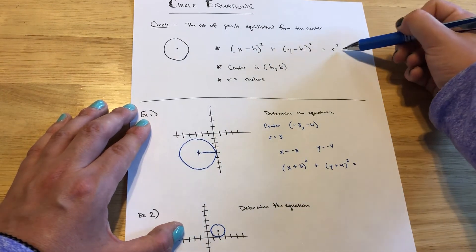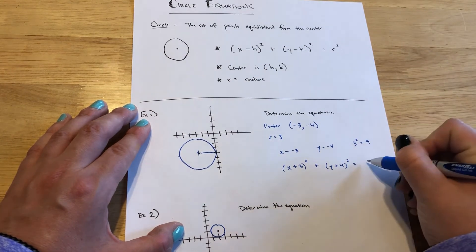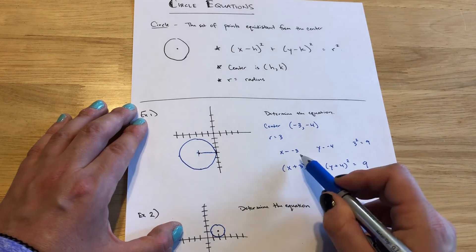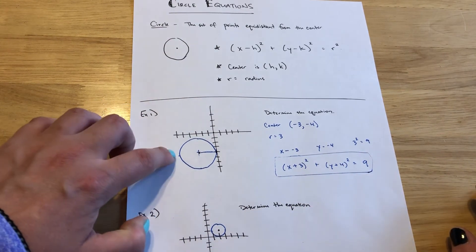And it's equal to the radius squared. Well, 3 squared is 9. So 9 would be in our equation. And that would be the equation for this circle.